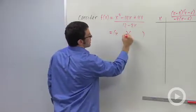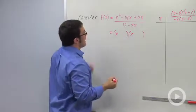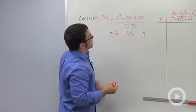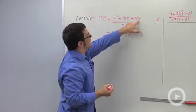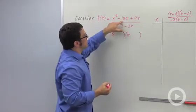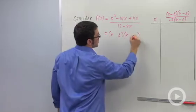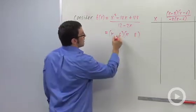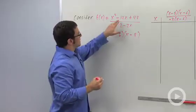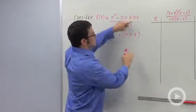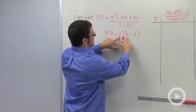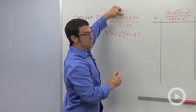I would factor the numerator starting with an x in each of these factors. And I want to look for factors of 48 that are going to give me 14, so 6 and 8. And if I use minus 6 and minus 8, I'll get this exactly. I'll get minus 6 times minus 8 is 48, and minus 6x minus 8x is negative 14x.